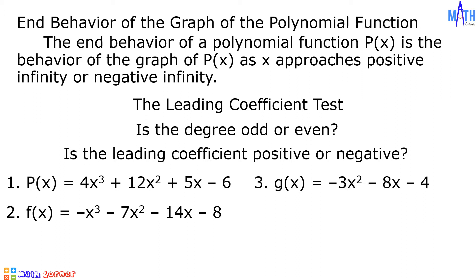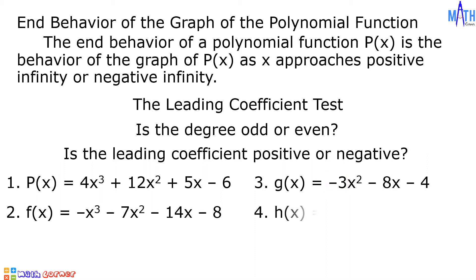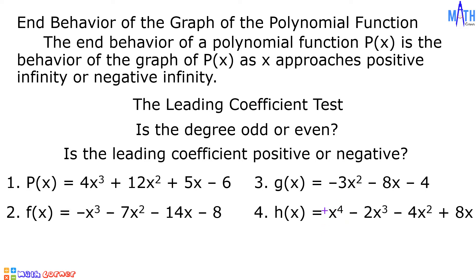Example number three: g of x equals negative 3x squared minus 8x minus 4. The leading term is negative 3x squared. It is a polynomial of even degree. The leading coefficient is negative. Example number four: h of x equals x raised to 4 minus 2x cubed minus 4x squared plus 8x. The leading term is x raised to 4. It is a polynomial of even degree. The leading coefficient is positive.